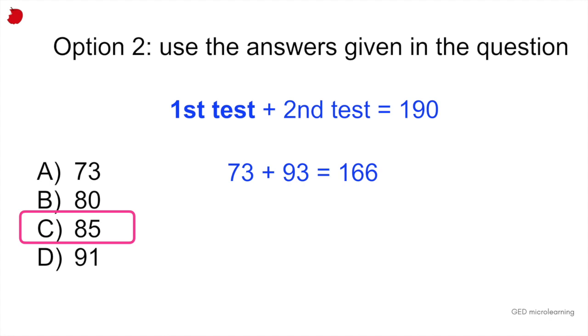Answer B. They're telling us that the first test is 80 points. So if the first test score is 80, then we know that the second test score is going to be 10 points more. So that would be 100. 80 plus 100 is 180. So that's incorrect because the correct answer should be equal to 190.